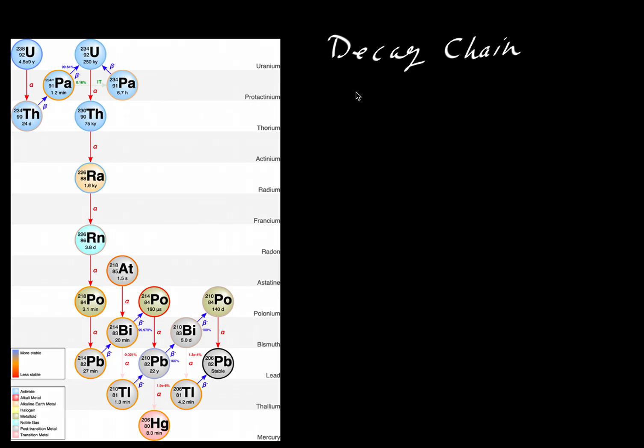In two other videos, we took a look at so-called alpha and beta decay. And here we're going to look at a decay chain involving, in this case, as an example, uranium-238, that involves a combination of these. So we have here uranium-238. It has an atomic number of 92. Again, it must be 92. Otherwise, it's not uranium.